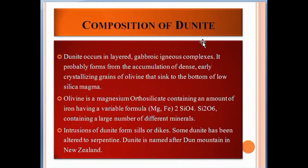Dunite occurs in layered gabbroic igneous complexes. It probably forms from the accumulation of dense, early-crystallized grains of olivine that sink to the bottom of low-silica magma. Olivine is magnesium orthosilicate containing an amount of iron, having a variable formula of Mg and Fe.